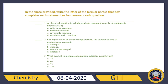Question number one: a chemical reaction in which products can react to re-form reactants is known as what — a reforming reaction, buffer reaction, reversible reaction, or reversible reaction? The correct answer is C, reversible reaction. A reversible reaction is one in which products can react to re-form reactants. For example, if A plus B gives us C and D, then C and D can recombine to give us A and B again.